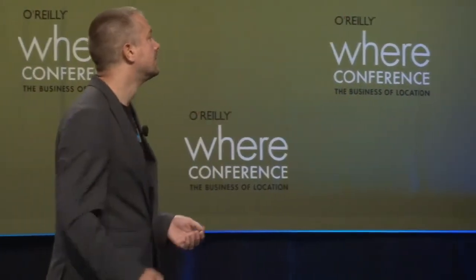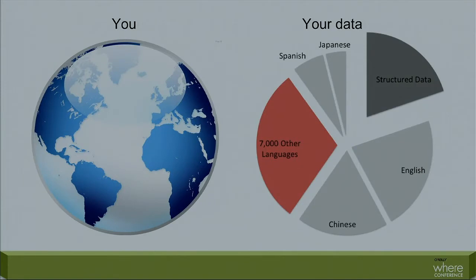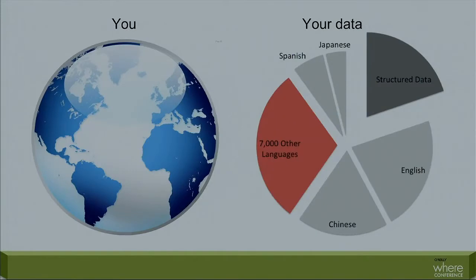My name is Robert Munro. I'm a computational linguist, and that means I make computers understand people, mostly so that I don't have to. I run an organization called Edibon. We work in text analytics on a web scale, because a very small amount of the world's data is structured. Most of it is in plain text, and the largest growing segment is the 7,000 languages which you've probably never even heard of.